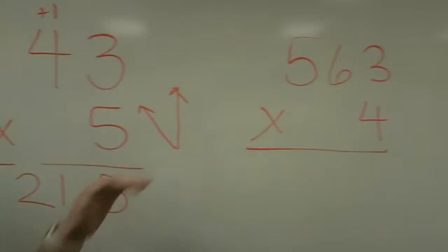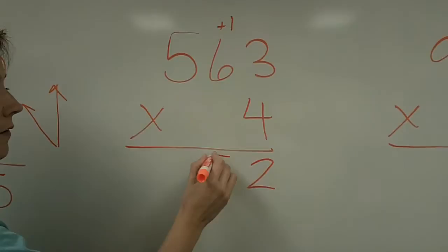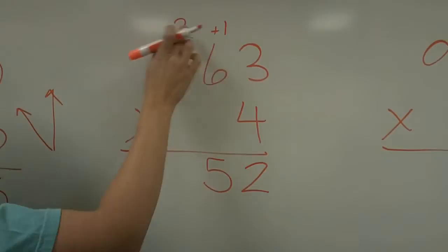Let's look at a 3 digit by 1 digit. 4 times 3 is 12. So I'm going to put the 2 and regroup the 1. 4 times 6 is 24, plus 1 is 25. So I'm going to put the 5 and regroup the 2. 4 times 5 is 20, plus 2 is 22. So we're going to drop the whole 22 down, 2,252.